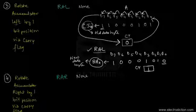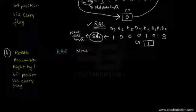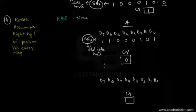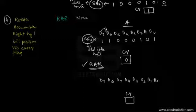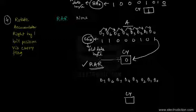The carry flag was previously reset and is now set after executing the RAL instruction. Similarly, executing the RAR instruction does the reverse. Taking the same example where the accumulator contains C5H (the old data byte), after executing the RAR instruction the data bits move towards the right by one bit position — D7 becomes D6, D6 becomes D5, D5 becomes D4, and so on.